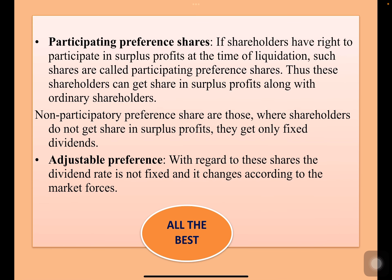Participating preference shares: if shareholders have the right to participate in surplus profits at the end of liquidation, such shares are called participating preference shares. These shareholders can get a share in surplus profits along with ordinary shareholders. Non-participatory preference shares are those where shareholders do not get a share in surplus profits — they get only the fixed dividends.